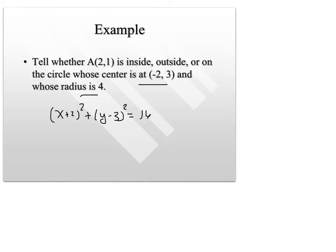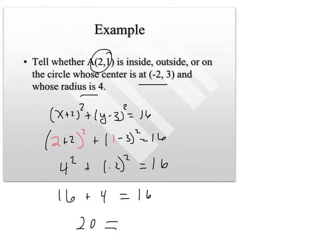So then what I'm going to do is I'm going to plug in the point. So I have 2 plus 2 squared plus 1 minus 3 squared is equal to 16. So what's in red was the point. Okay, so 2 and 1 were entered in. So I got 4 squared plus negative 2 squared, and is that equal to 16?